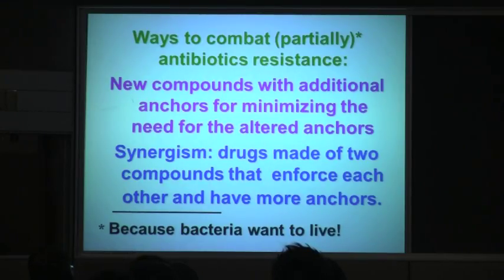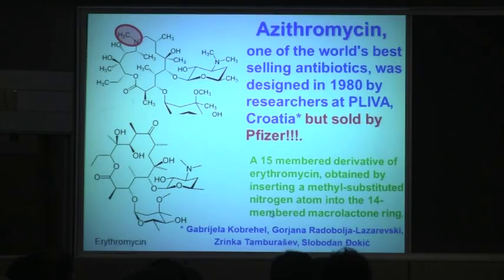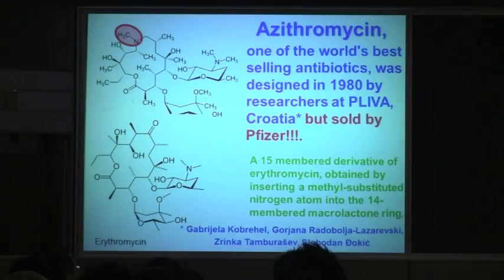The other approach is to make drugs made of two components. Adding anchors is shown here — below is erythromycin, and this is azithromycin, which is erythromycin with one more atom. This is fantastic. It was developed in Croatia in a company called Pliva. I met a chemist from this company in the 1980s at Hong Kong airport, and he told me they made it to bind to resistant strains — strains that have G instead of A.